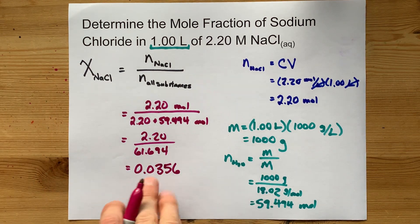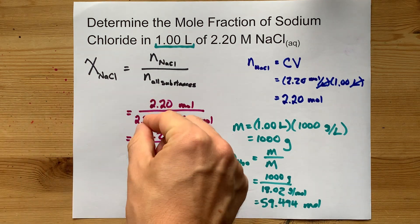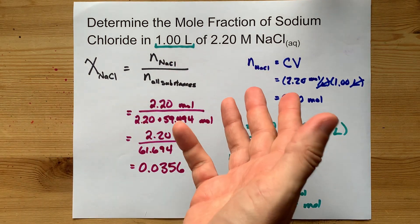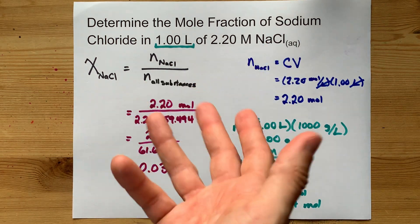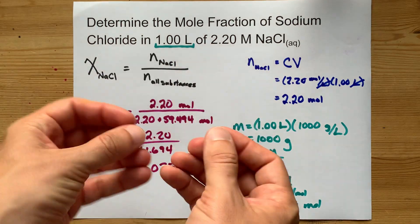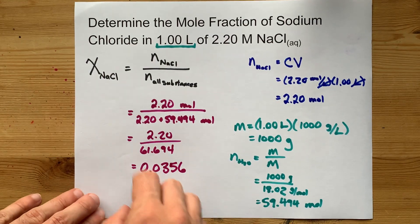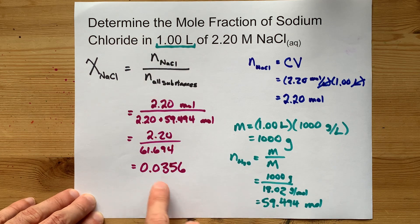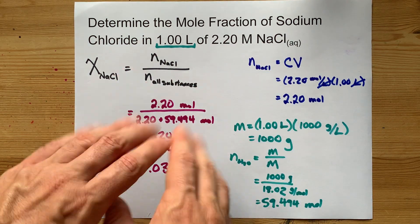That is basically 3.56%, meaning if you take a random particle out of this mixture, there is a 3.56% chance it's going to have been NaCl. The mechanics of that are way different because NaCl dissolves, but that's not the point. The point is, of all the particles, 3.56% of them were NaCl.